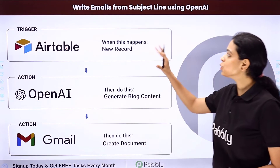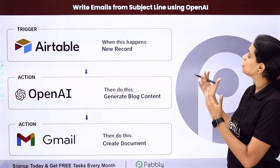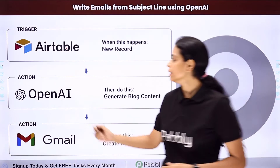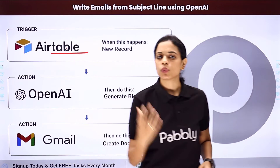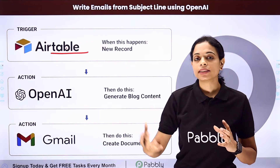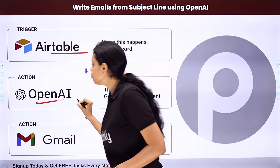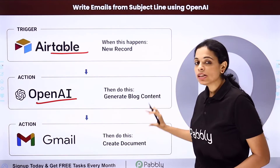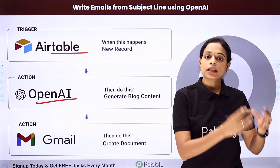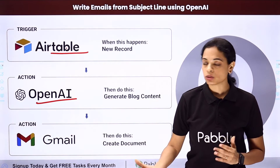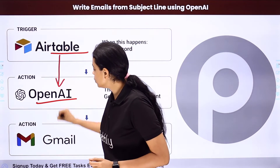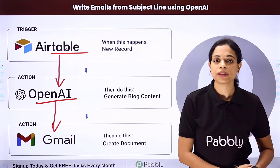In this video, we are going to see how to write emails from subject lines using OpenAI. Let's say that you have different subject lines in Airtable, and you are trying to make your work easier. Every time a new record is added — a new subject line — you want that with the help of OpenAI, an email should be created based on that subject line and then sent to the admin, so that he can send it to employees or clients. For this you will need some integration between these three applications, and the same can be done using Pabbly Connect software.